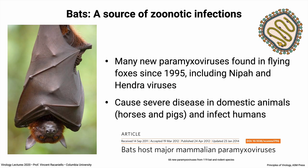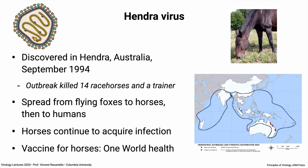Now let's talk about bats and viruses. Bats are a major source of zoonotic infections. This flying fox can be three feet from top to bottom — many new viruses have been found in bats. Flying foxes have had two major human pathogens — Nipah and Hendra viruses — found in them, causing disease not only in humans but in horses and pigs. A 2014 study found 66 new paramyxoviruses from 119 bat and rodent species — and that's just the tip of the iceberg. Nipah and Hendra are paramyxoviruses, like measles — enveloped, negative-strand RNA viruses.